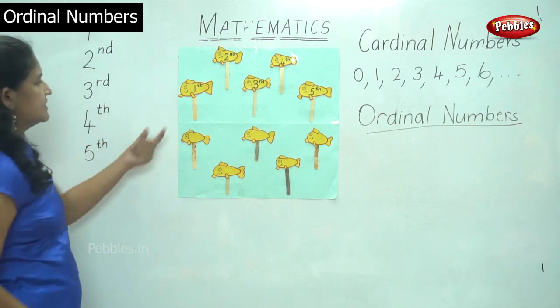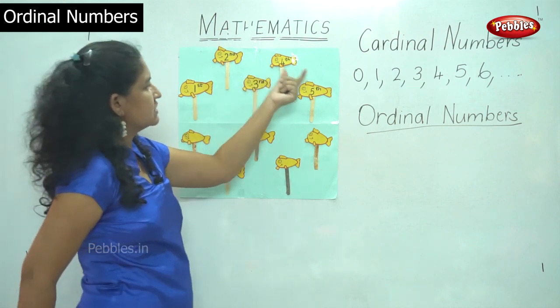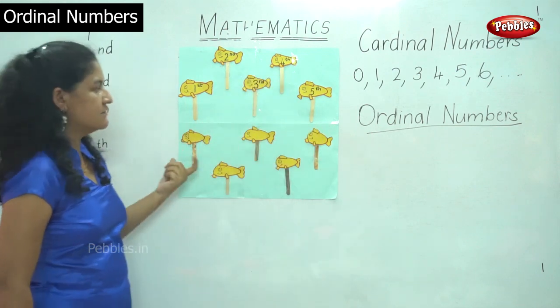So we say this fish is first, this is second, this is third, this is fourth, this is fifth. And we come down to the next.